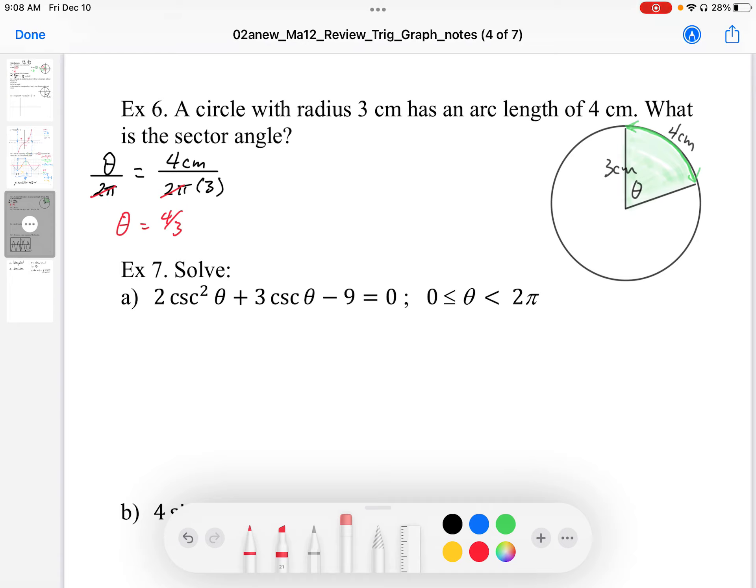And if you really want to know the formula, the formula in radians is, so the angle in radians is equal to the arc length over circumference, sorry, arc length, not the arc length over the radius.